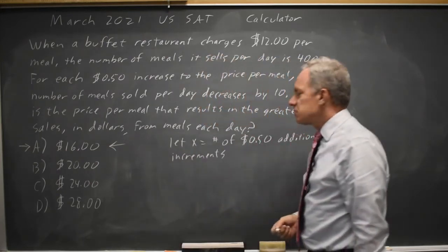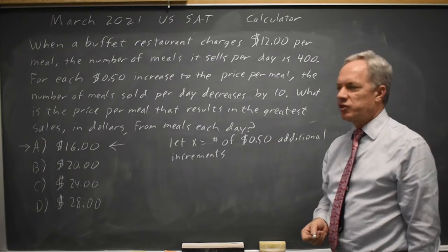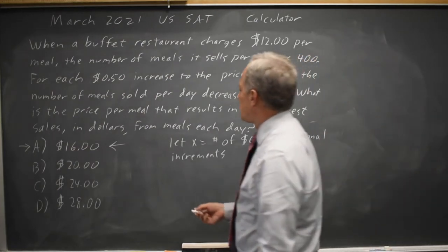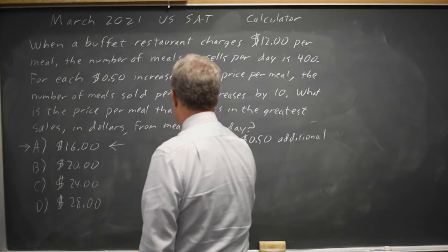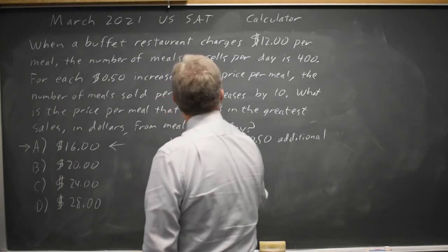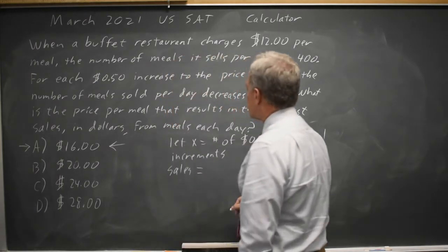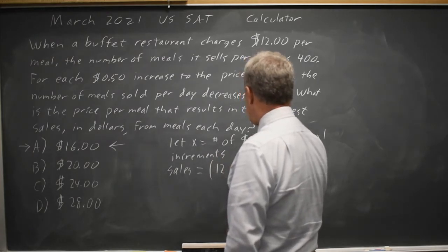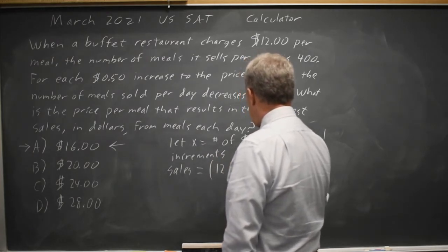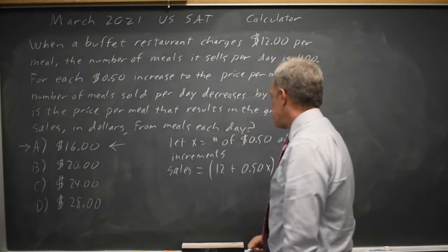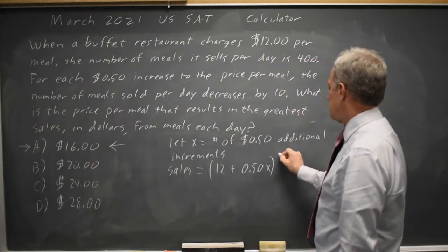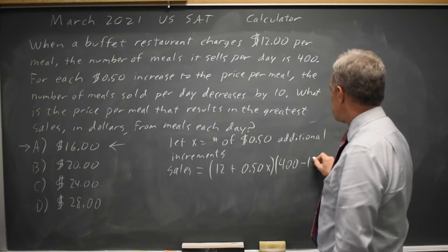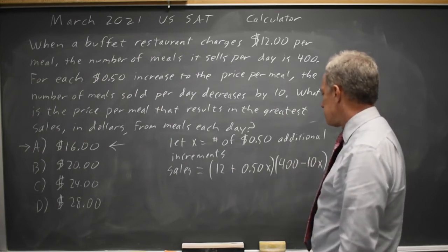We can do this more quickly on our graphing calculator by writing the sales equation. If I make x the number of $0.50 increments in the price, then our sales would be the price — which is $12 plus $0.50 times the number of those increments — and then times 400 minus 10 times the number of increments.